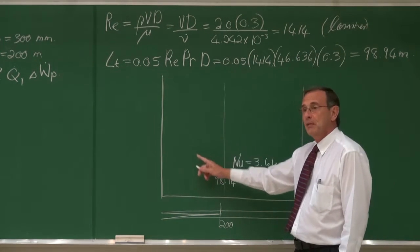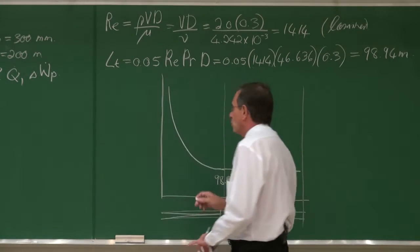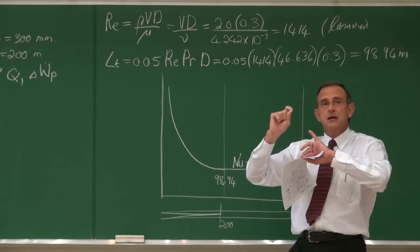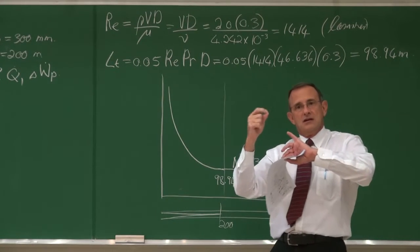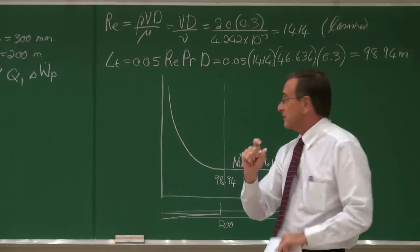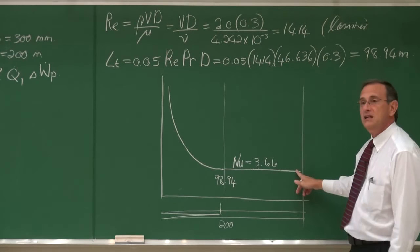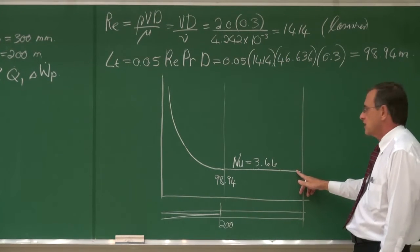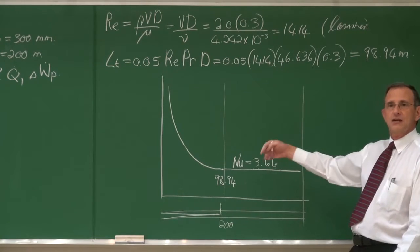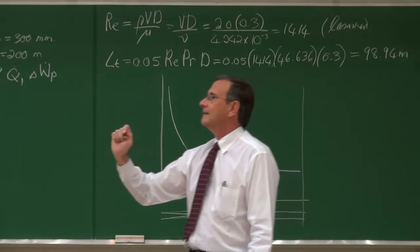Upstream, the Nusselt number will be higher because the thinner the thermal boundary layer, the higher the heat transfer coefficient. So the average Nusselt number over the full length will be significantly higher than 3.66. This is why it is always important to think about the entrance region and its effect.